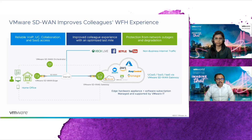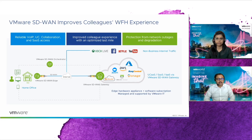Let me quickly walk you through the high-level architecture. There are three main components: the SD-WAN device itself, also referred to as SD-WAN Edge, which is deployed at the employee's house. Next, we have the VCO, which is the SD-WAN Cloud Orchestrator — it allows centralized, single-pane-of-glass management of our entire SD-WAN deployment across VMware. Last but not least, the SD-WAN gateways, which are virtual appliances strategically placed near business-critical SaaS services for optimal routing.